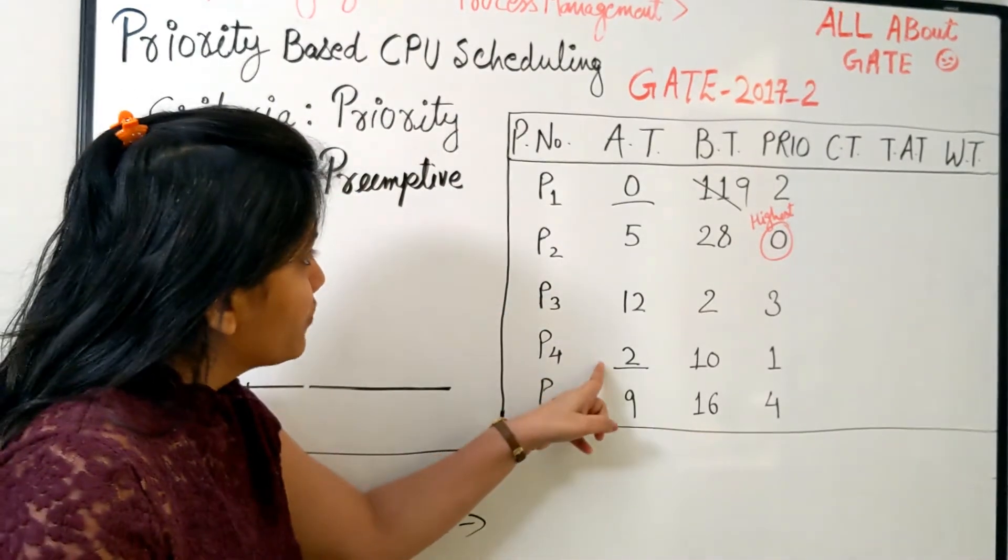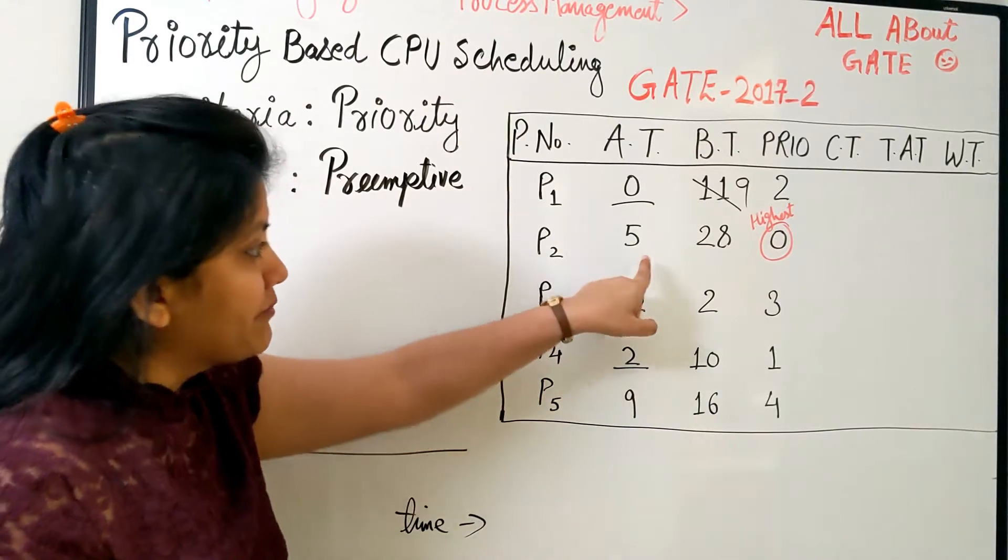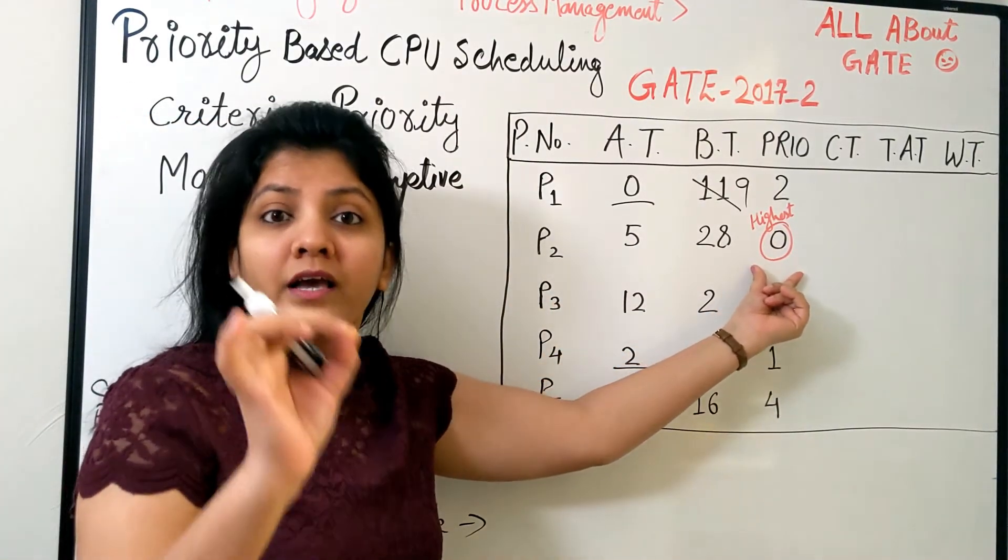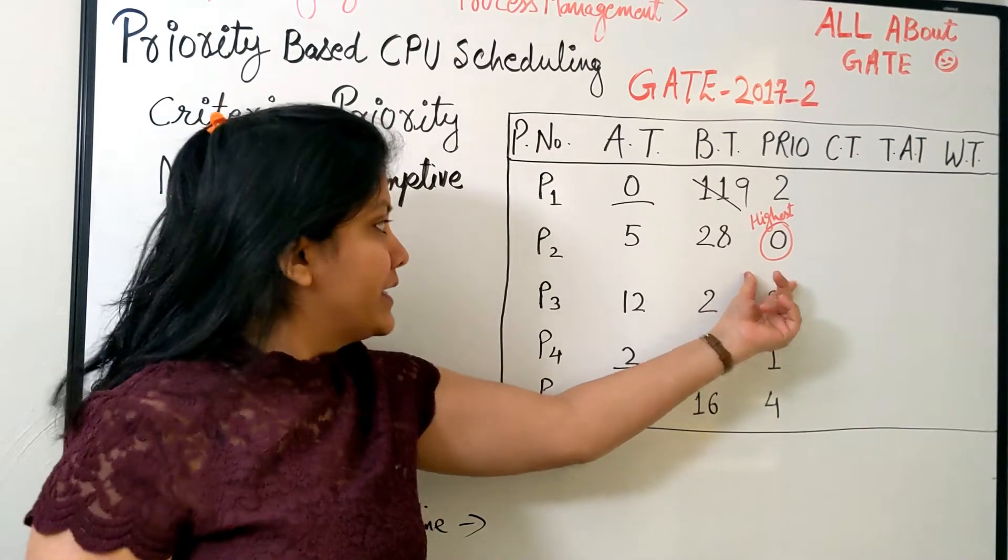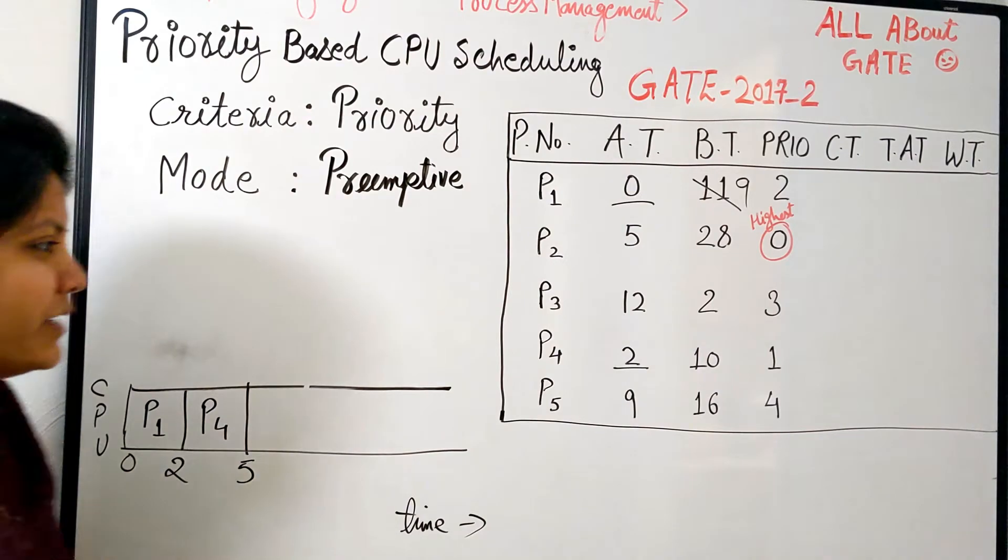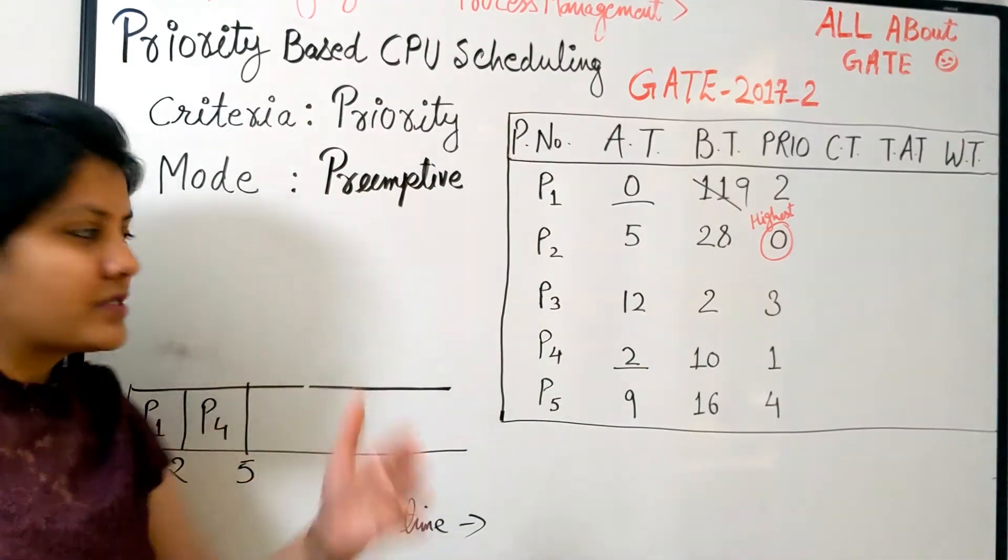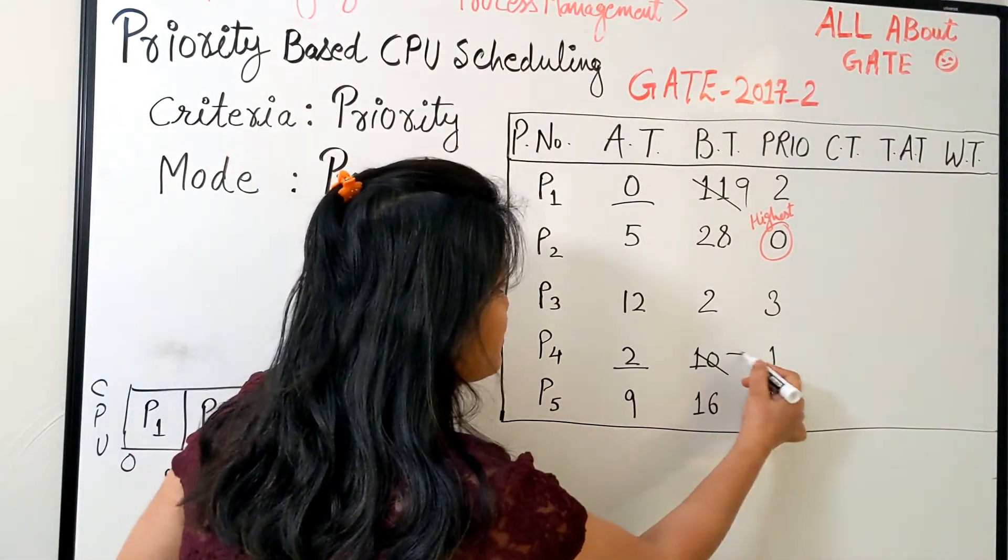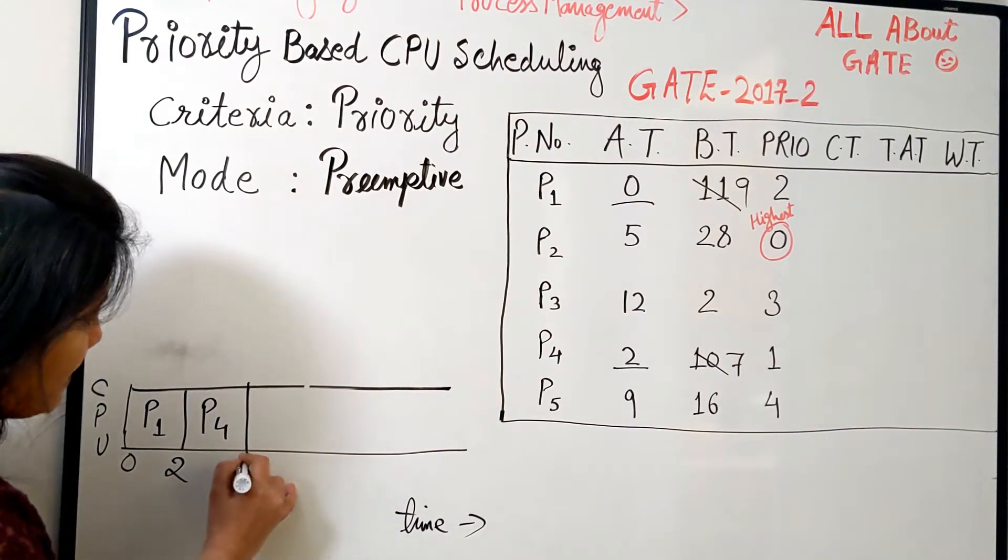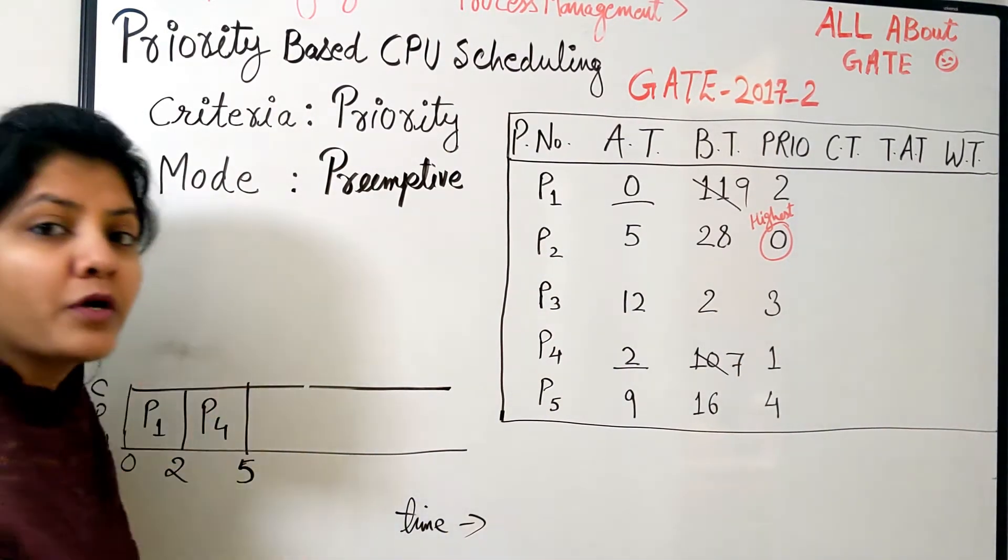P4 will come here and P1 will be kept back in the ready queue. Mind it, P1 has run for two time units, so it has become from 11 to 9. Now we're going to schedule P4. It has priority 1, but let's see what is the next process arriving. The next process arriving is at time 5, which is P2 with the highest priority.